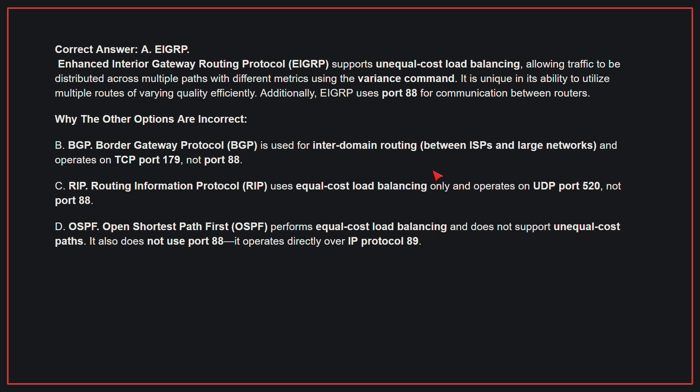Why the other options are incorrect? B, BGP: Border Gateway Protocol is used for inter-domain routing and operates on TCP port 179, not port 88. C, RIP: Routing Information Protocol uses equal cost load balancing only and operates on UDP port 520, not port 88. D, OSPF: Open Shortest Path First performs equal cost load balancing and does not support unequal cost paths. It also does not use port 88; it operates directly over IP protocol 89. Therefore, the correct answer is A, EIGRP.